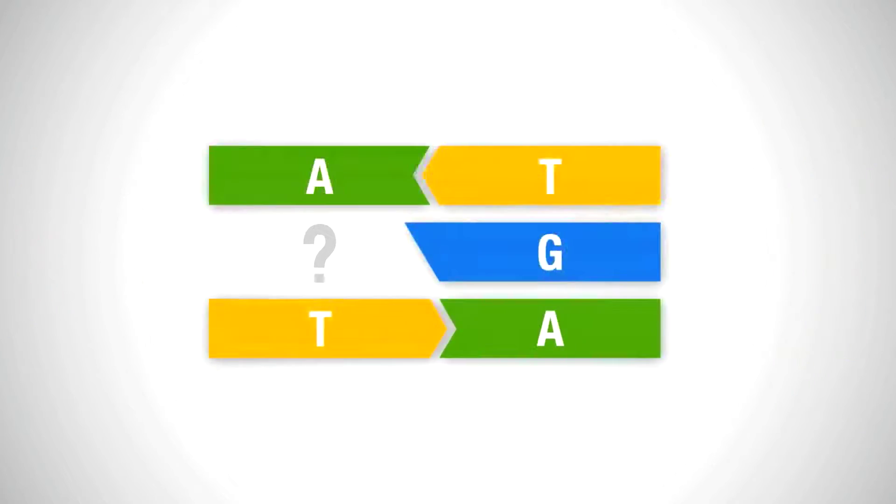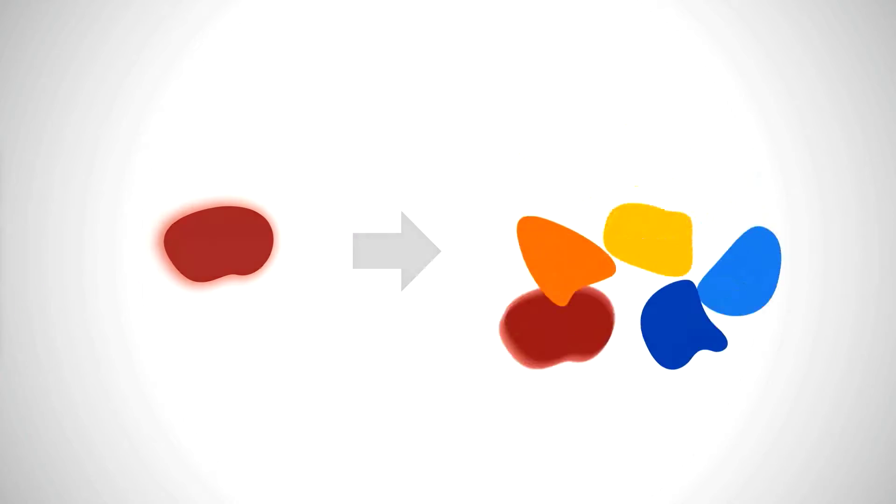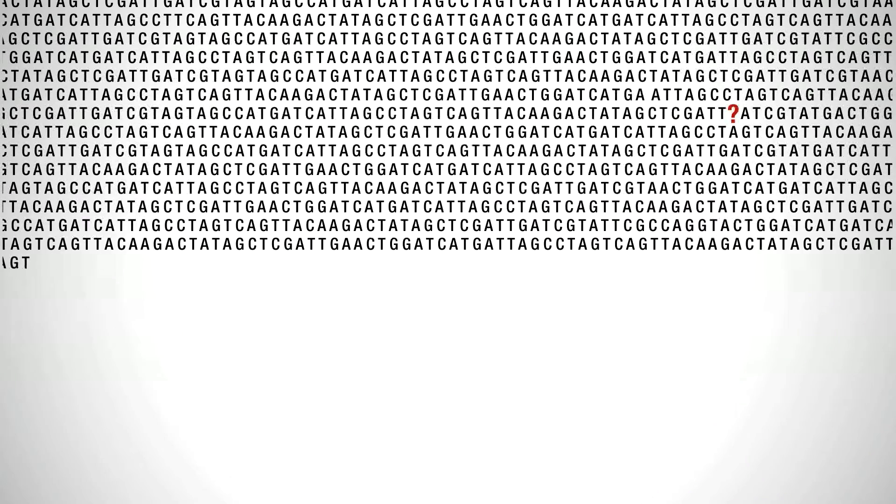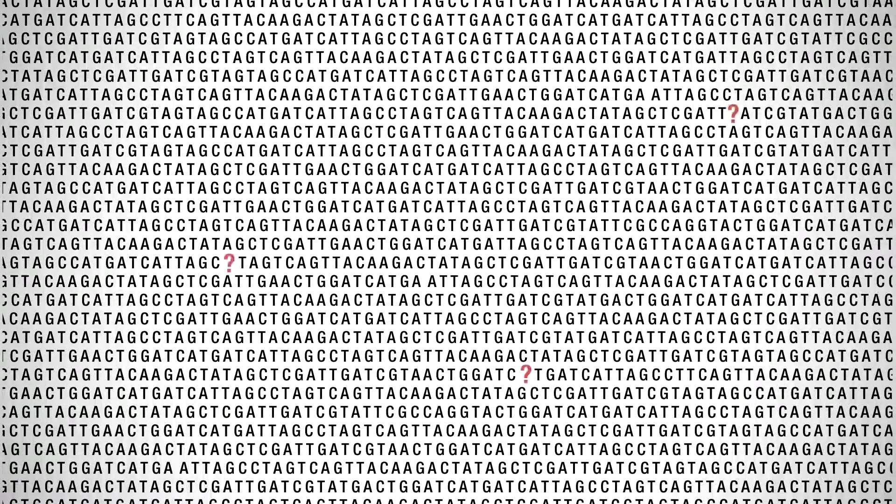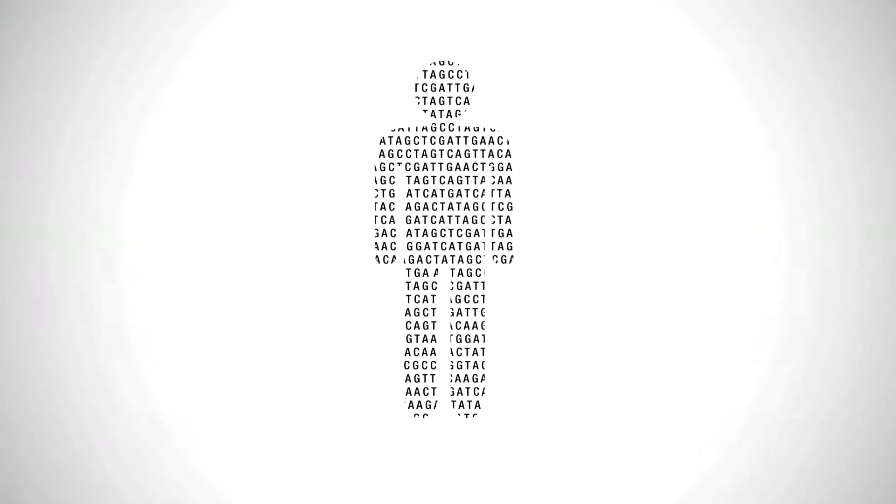Sometimes genes can be mutated. This can cause genetic abnormalities or disease. We can find these mutations through gene sequencing. Gene sequencing looks at every gene that makes up the human genome.